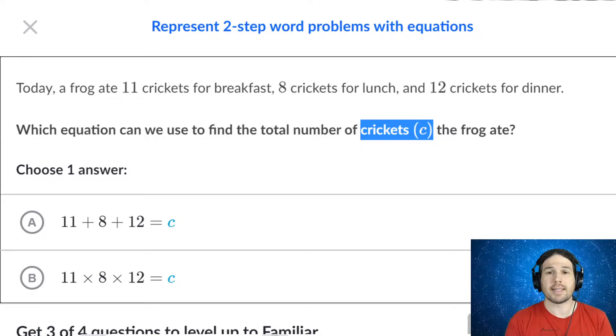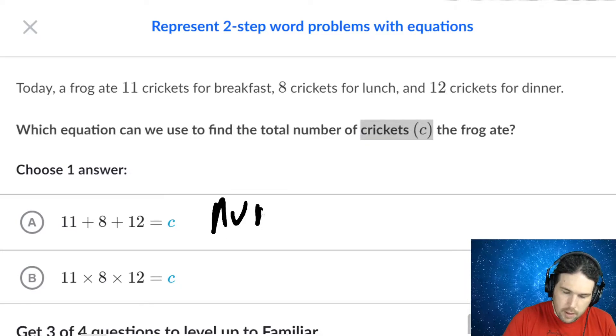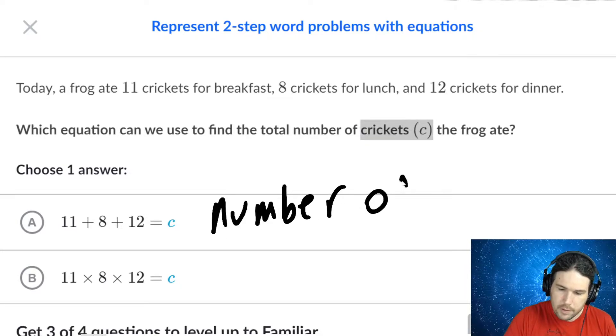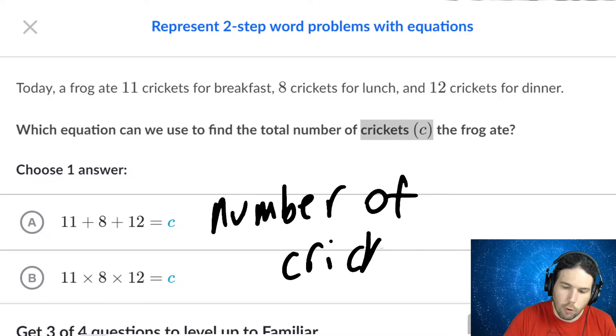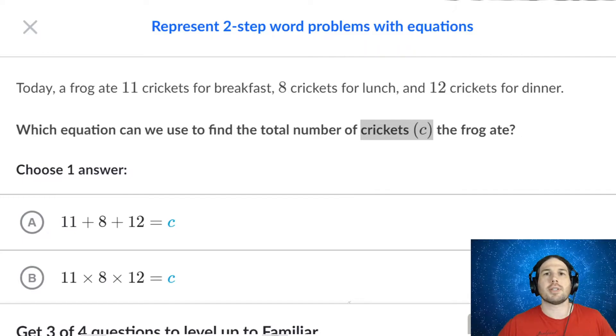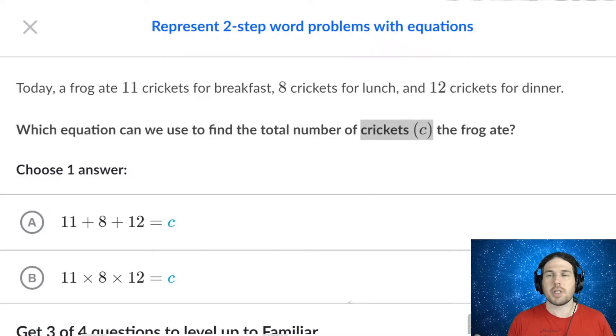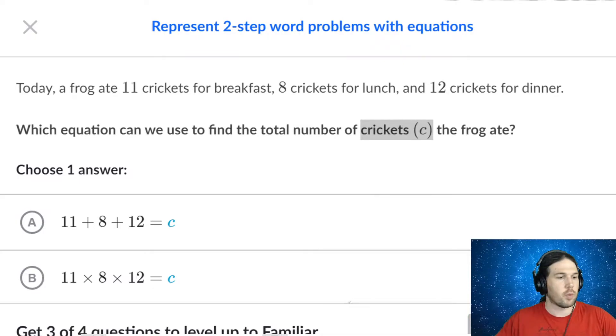And what this is telling us right here is that we are naming the number of crickets C. So from here on out, instead of having to write number of crickets over and over and over again, instead, we can just say C. C means the number of crickets, and we're just going to keep that filed away.